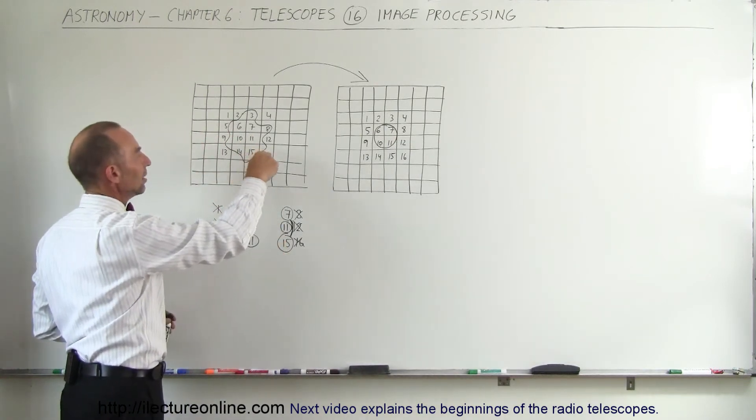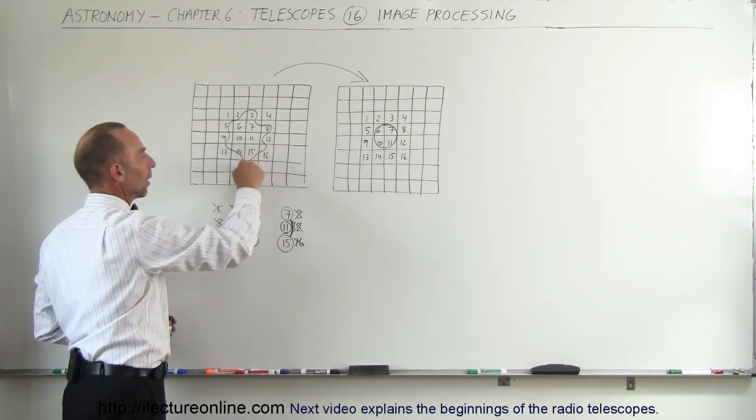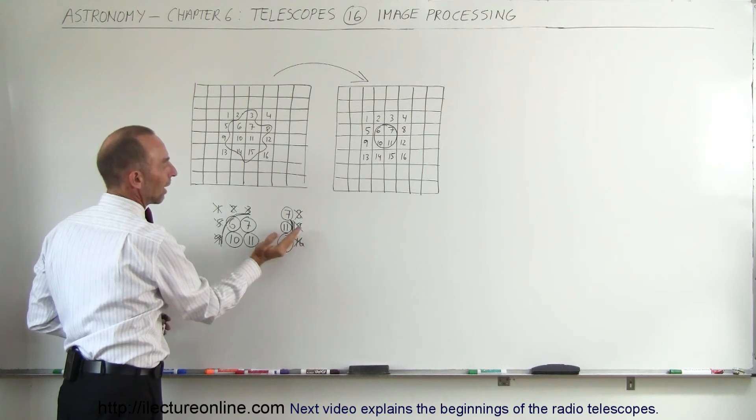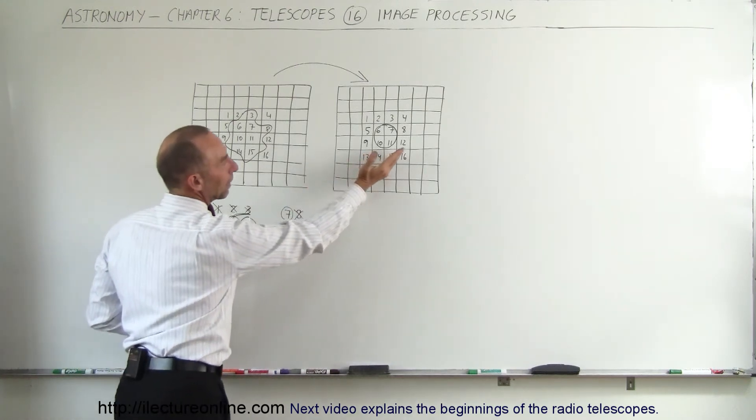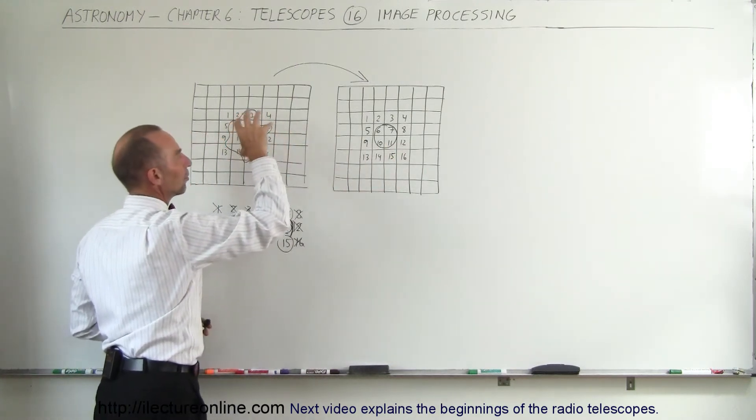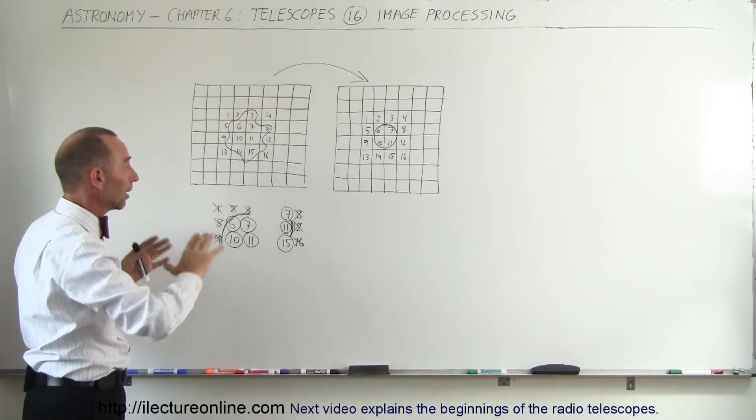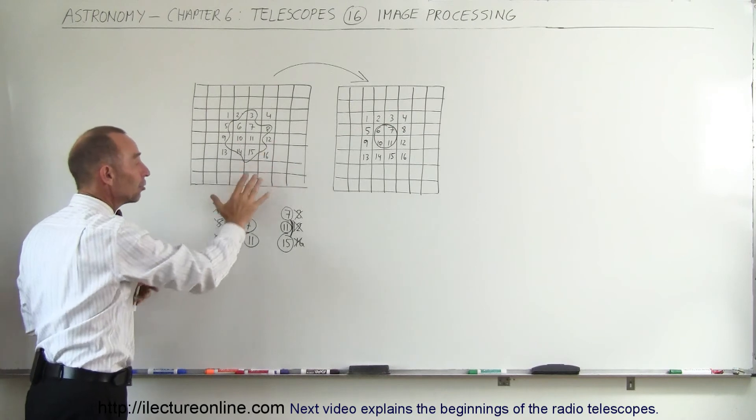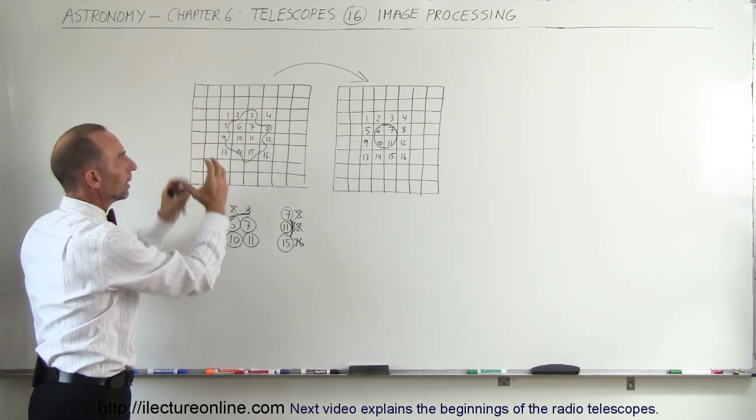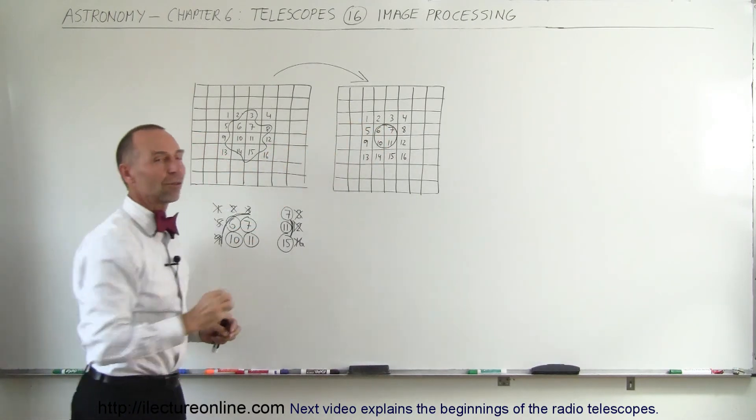We would do the same thing for number 15. Notice that the pixels around there are not relevant, so 15 would only have partial relevance and may or may not be included in the picture. By doing this over and over again for every single pixel on the image, we can take something that looks blurry and reprocess it into something that looks sharp.